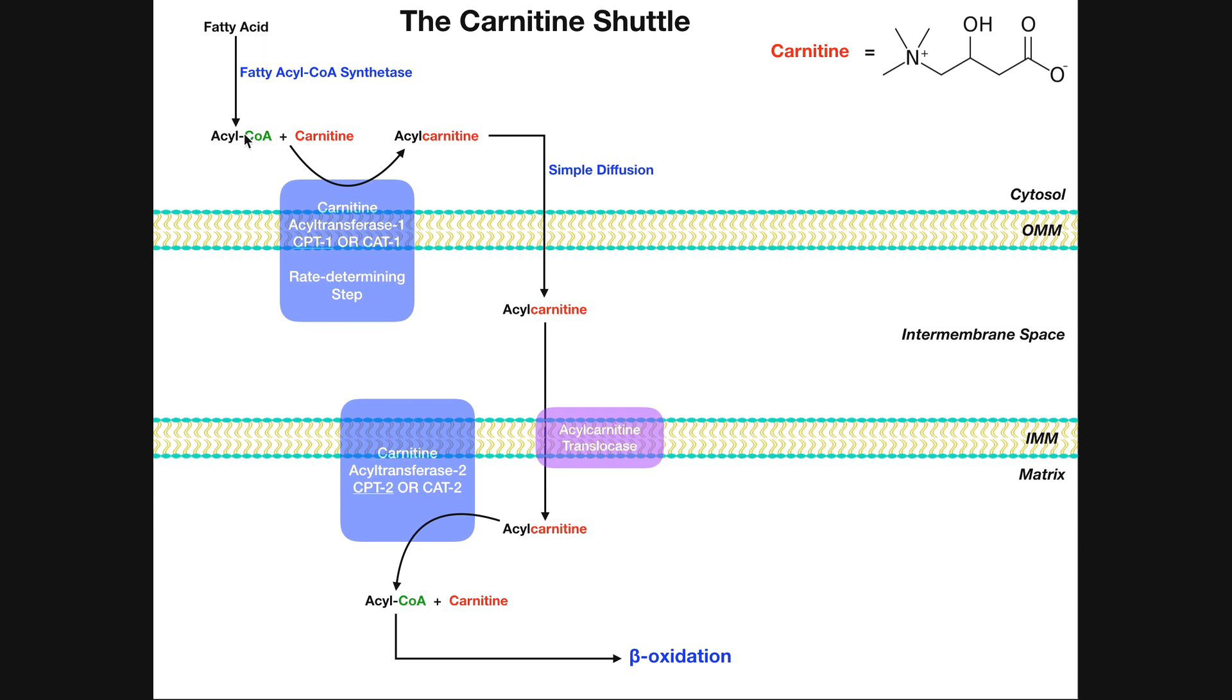The enzyme that adds this coenzyme A is fatty acyl-CoA synthetase, and so it converts a fatty acid into its derivative, acyl-CoA.